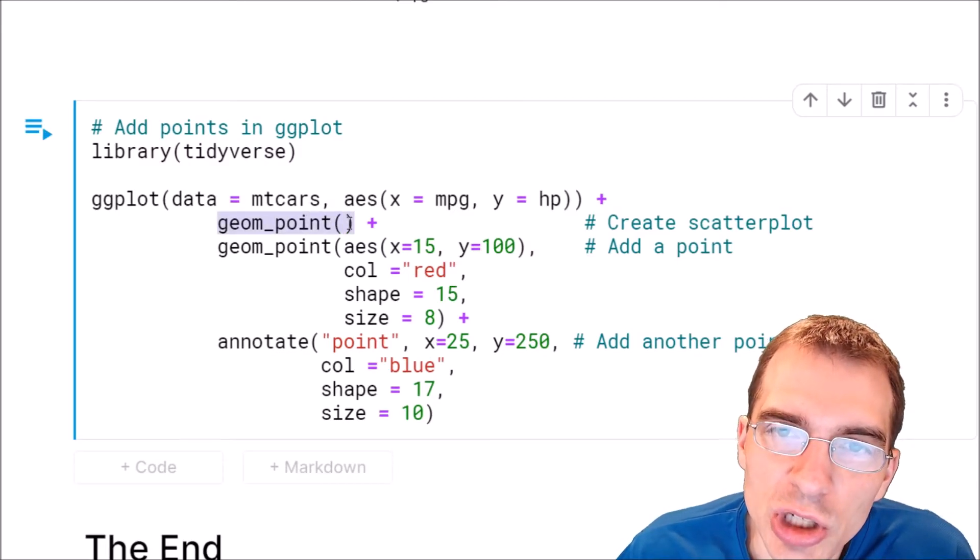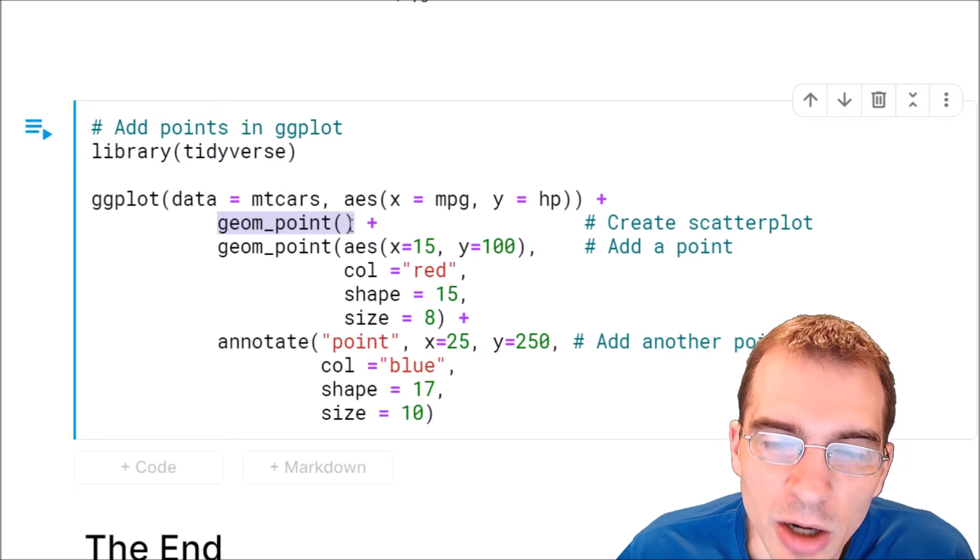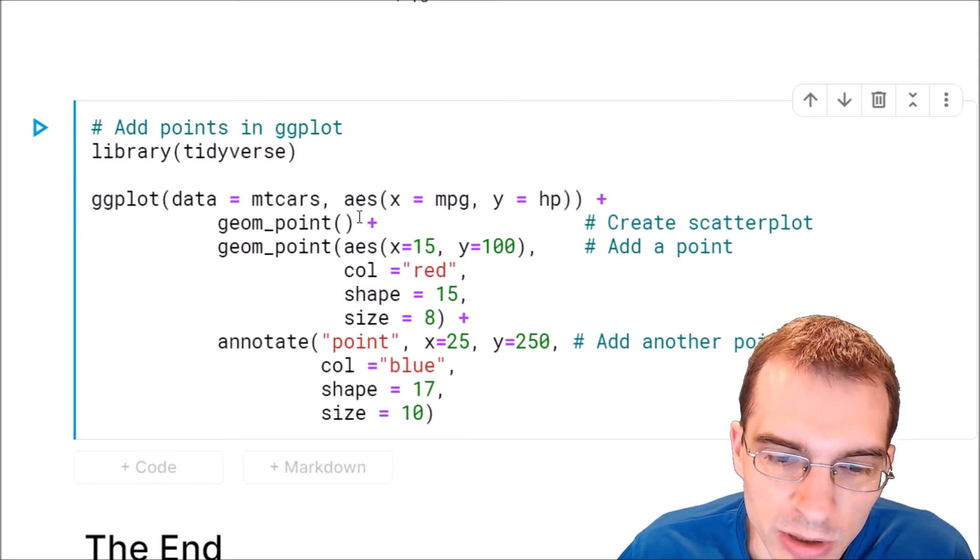But you can use geom_point to plot a point at an arbitrary position on the plot as well. And that's what we'll use to plot one of our points. So we'll show how to do that.